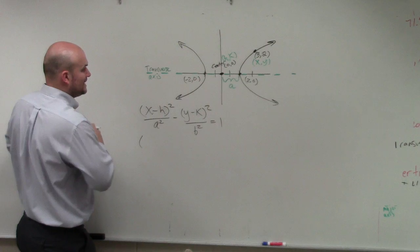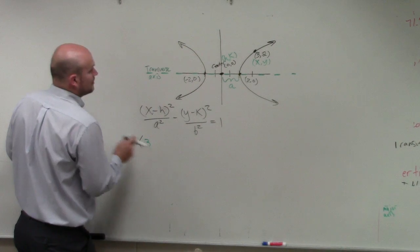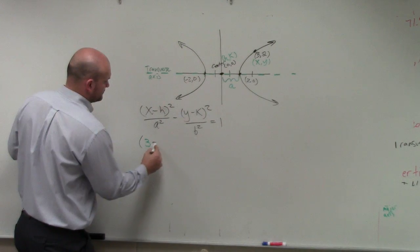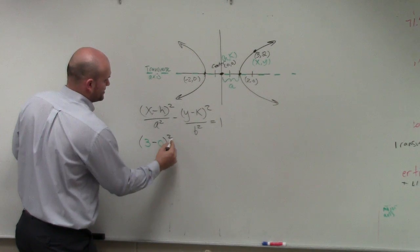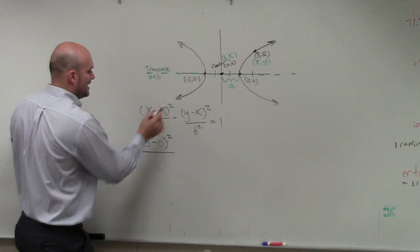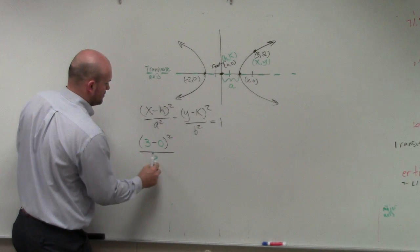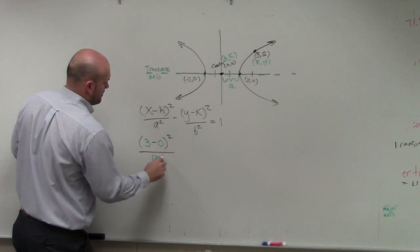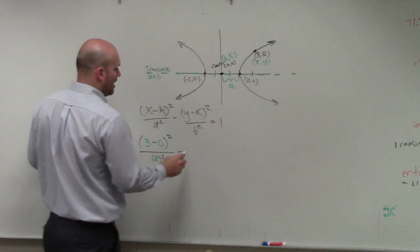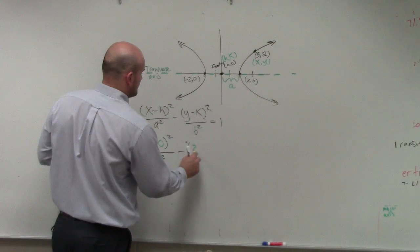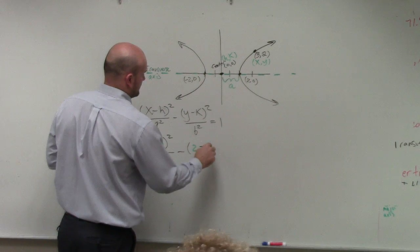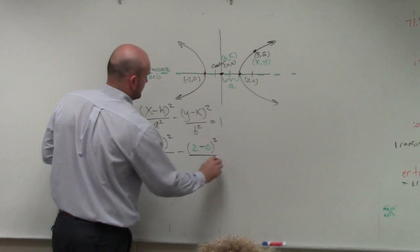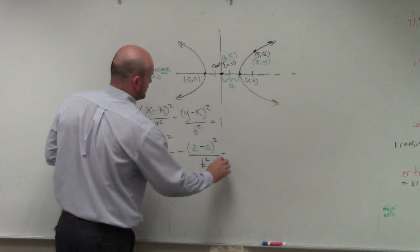So what we're going to do is we're going to plug 3 in for x minus 0. You don't really need to write the minus 0, but I'm just doing it so you guys see what I did. a is 2. And then that's minus y, which is 2, minus 0 squared. We do not know b squared equals 1.